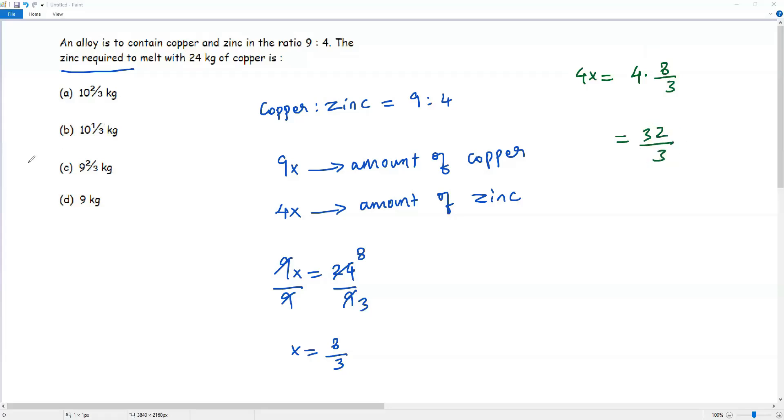When I look at the given options, I have mixed fractions: 10 and 2 thirds, 10 and 1 third, 9 and 2 thirds, and the last one is just the integer 9.